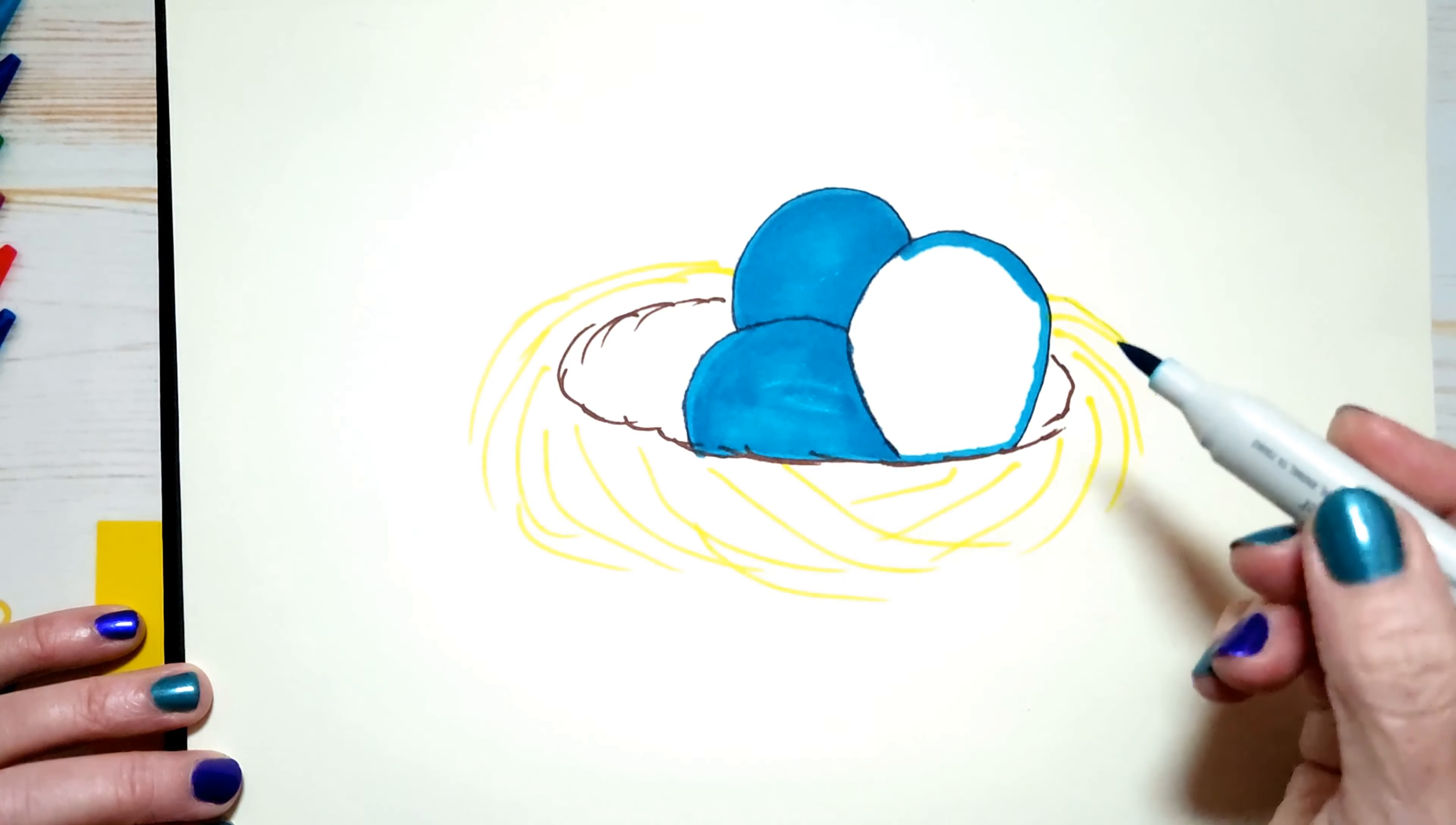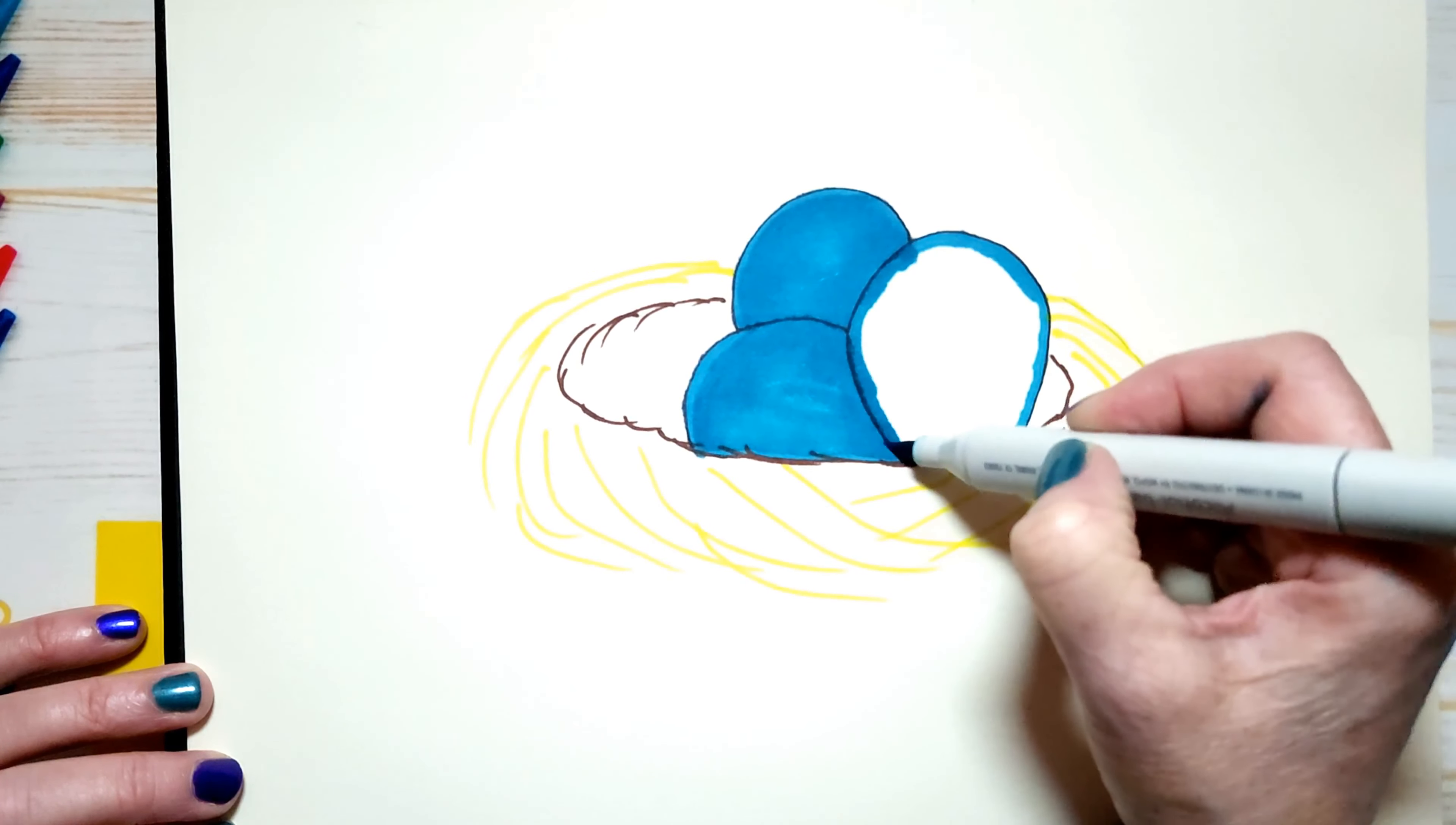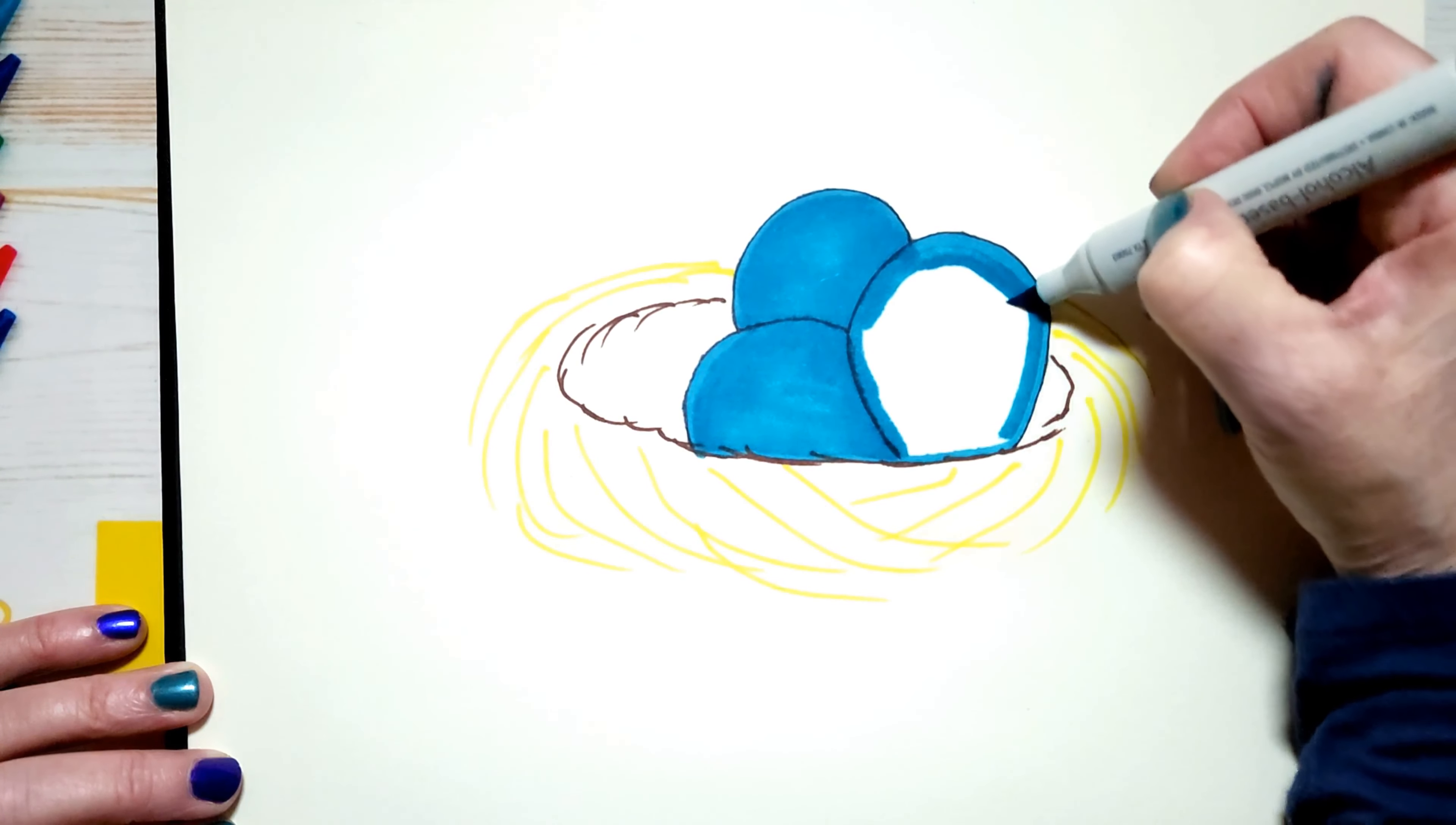So there we go. Two of mine are done. How are you guys doing? Are you using markers? Or did you decide to use coloring pencils or crayons? I like using markers a lot because the colors are so vibrant.